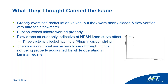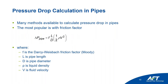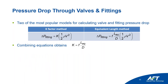So they decided to explore the loss calculations for fittings. For calculating pressure losses in pipes, the Darcy-Weisbach equation is one of the more popular methods. This calculation is the same regardless of whether it's laminar or turbulent flow — the friction factor differs for each regime, and Darcy-Weisbach accounts for both. For pressure drops through valves and fittings, there are two widely used methods: K-factors and equivalent lengths.